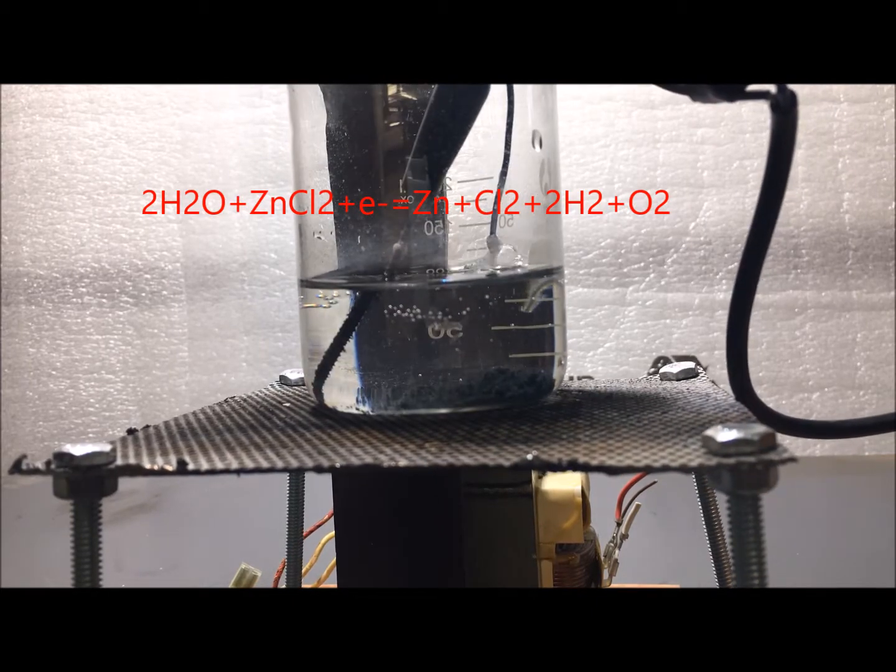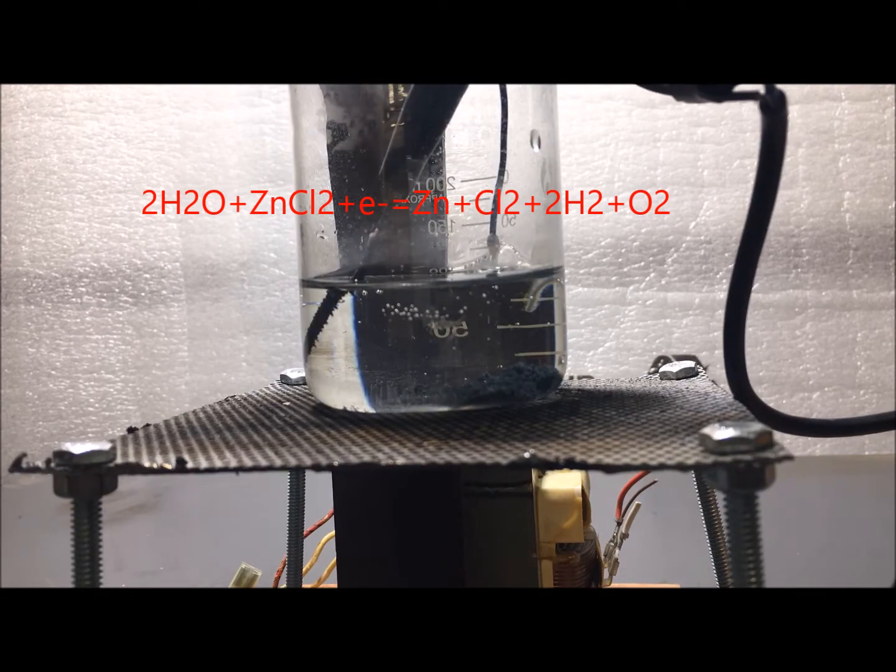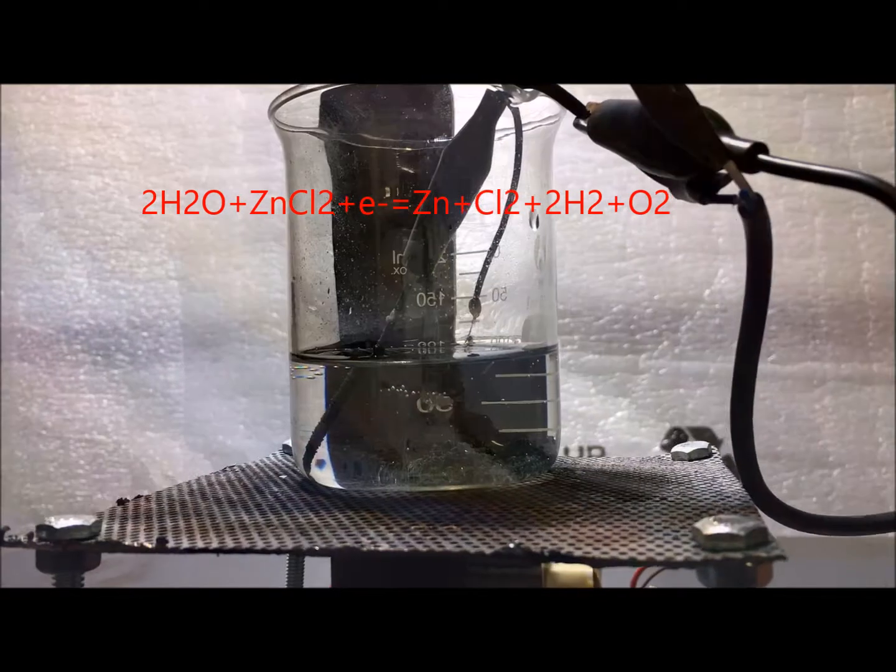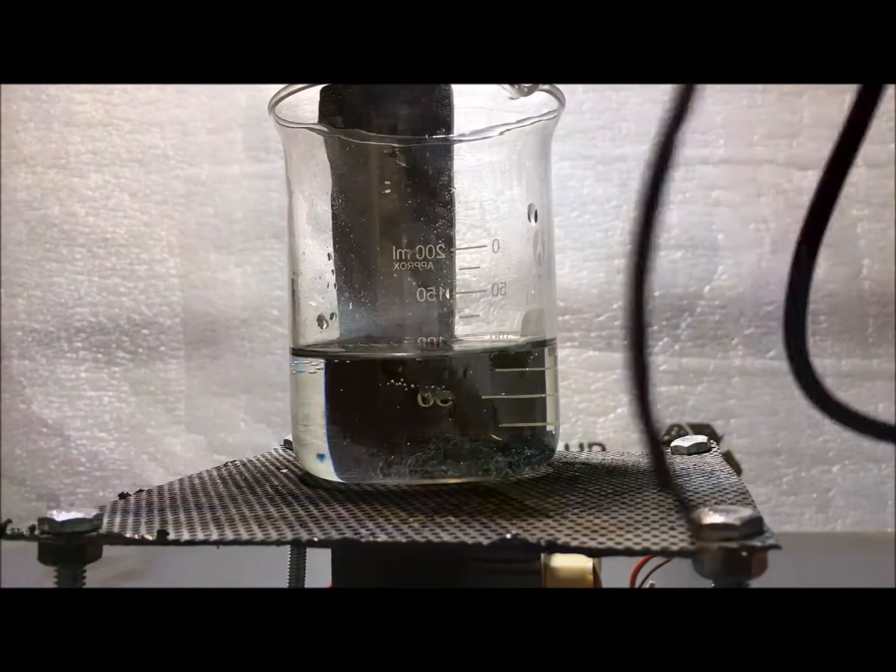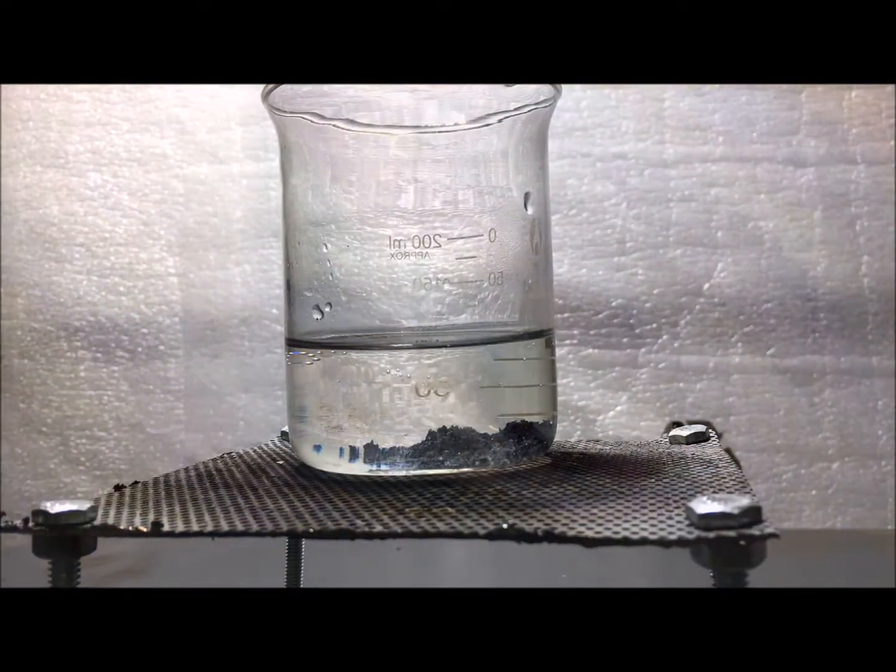The cathode is simply a carbon rod. Once the power is applied, you will see bubbles on both electrodes. The anode is producing toxic chlorine gas, while the cathode is producing hydrogen gas and zinc metal. You might want to do this outside.